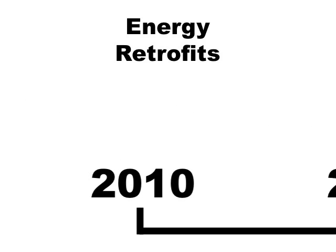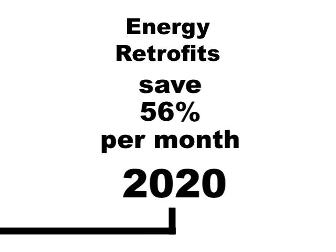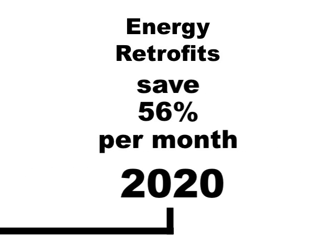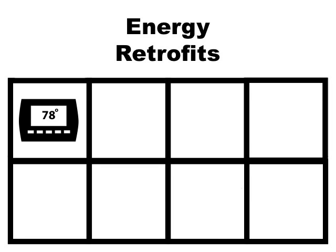For example, by 2020, energy retrofits can save an estimated 56% per month off of our electricity bill. To achieve this level of savings starting from the most cost-effective, we should install a programmable thermostat. Next, fix leaky ducts.